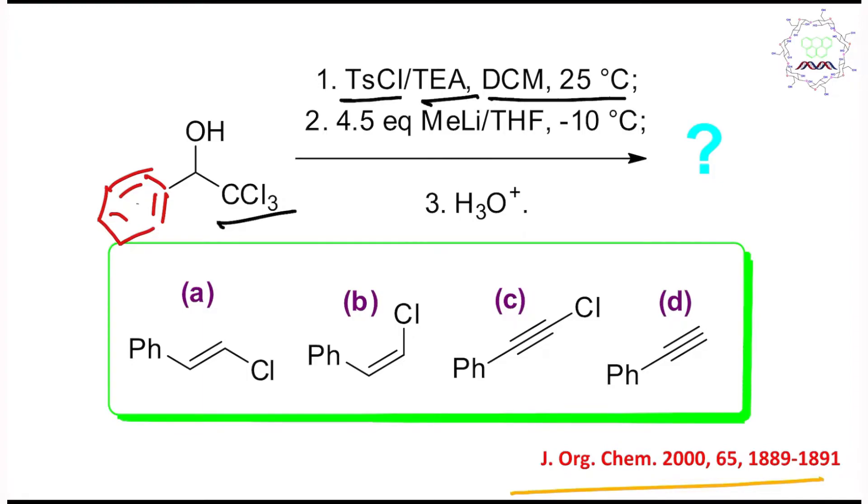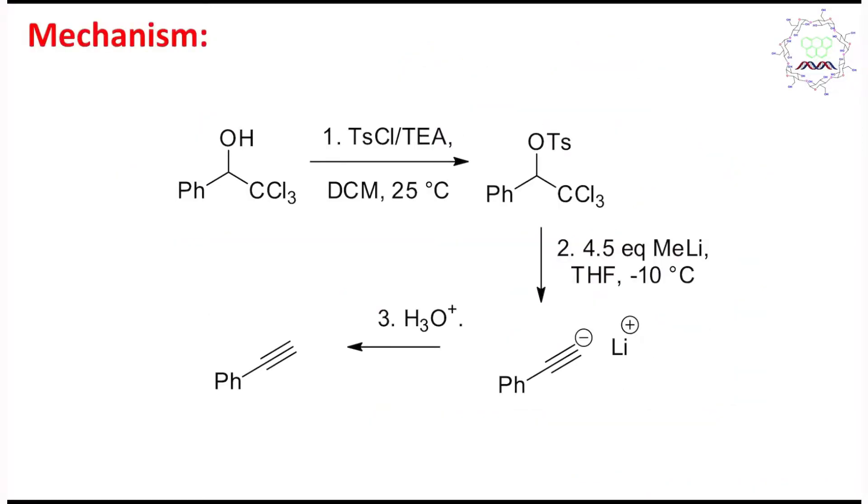In the first step, what reagent is given? Tosyl chloride, triethylamine, DCM at 25 degrees room temperature. It's a pretty selective reaction. It is nothing but a tosylation reaction, selective tosylation reaction. Tosyl chloride is para-toluene sulfonyl chloride, TsOCl. It's a sulfonic acid chloride. It will react with this alcohol and produce this tosylated product along with HCl. That HCl is quenched by base present as triethylamine, and DCM is solvent here. This reaction is so facile that it occurs at room temperature.